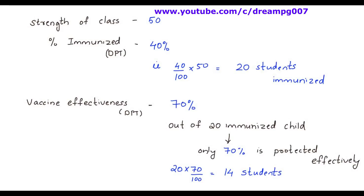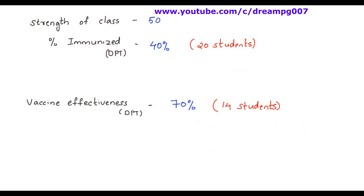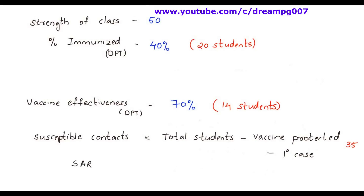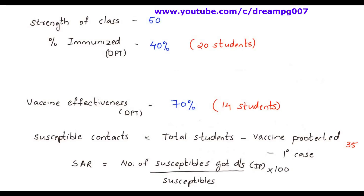So let's calculate the susceptible contacts in this class. Susceptible contact is obtained by subtracting vaccine-protected students and primary cases from the total students — about 35 students are susceptible contacts. Therefore, secondary attack rate is calculated by the formula: number of susceptibles who got the disease within the incubation period, divided by number of susceptibles, into 100. That is 30 divided by 35 into 100, which gives 85%.